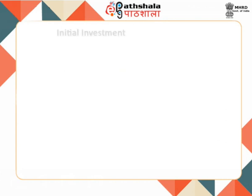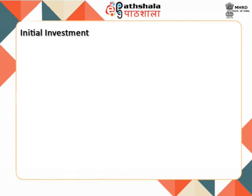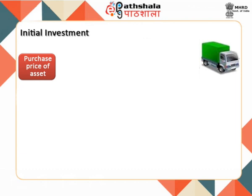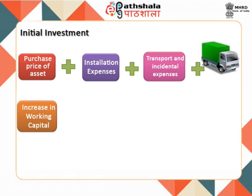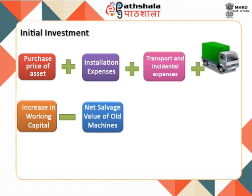We will start with the initial investment. It refers to the expenses incurred to start the work when a firm takes up a new project. The first type of cash outflow is the purchase price of the machine or any other asset. Other expenses such as installation and transportation costs are also added to the cost of machine. In addition, the company may need more cash for net working capital, including more inventories. Further, the salvage value of the old machine is subtracted to arrive at the amount required for initial investment, as the cash inflow from the sale of the old machine provides funds to the company.